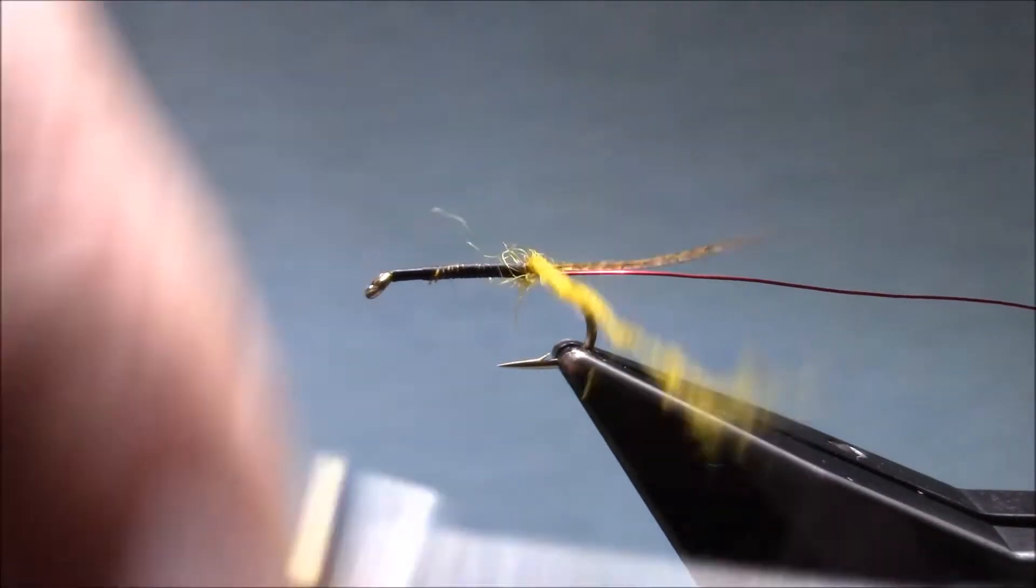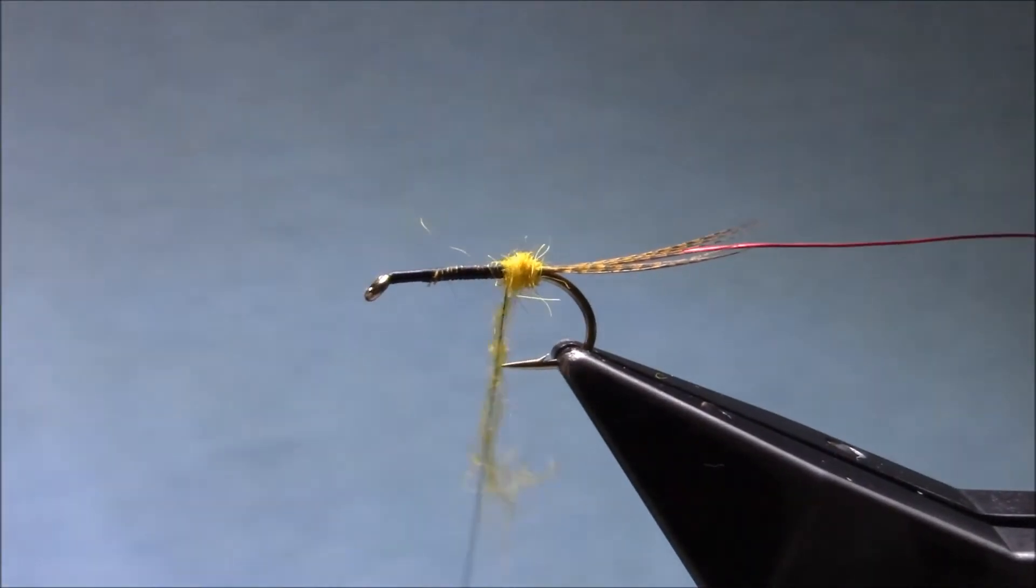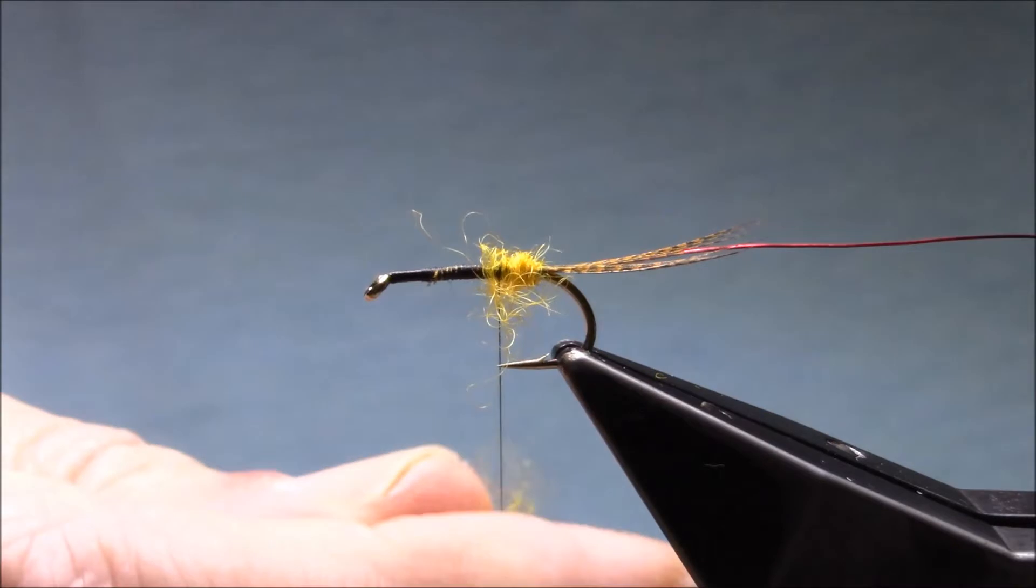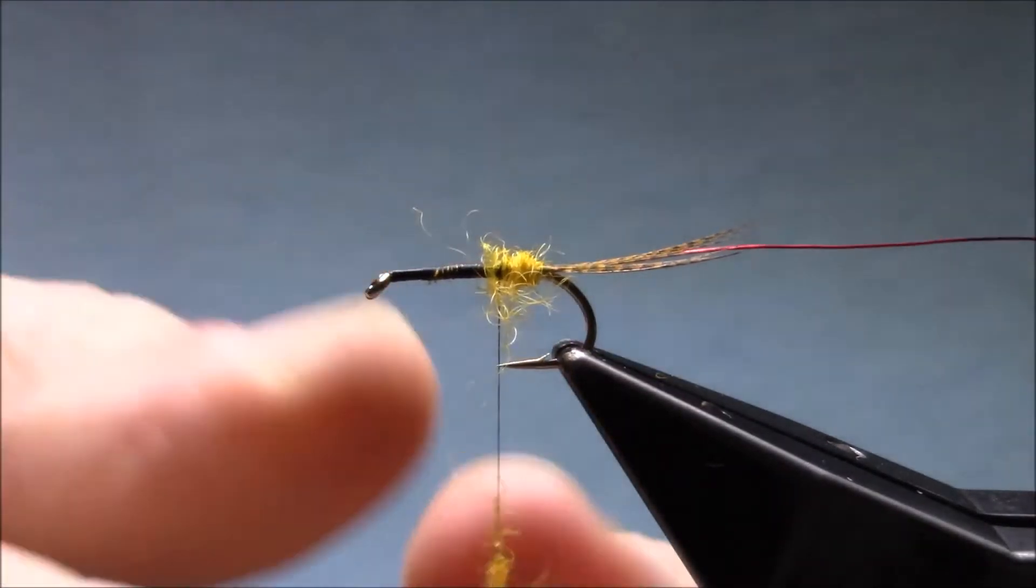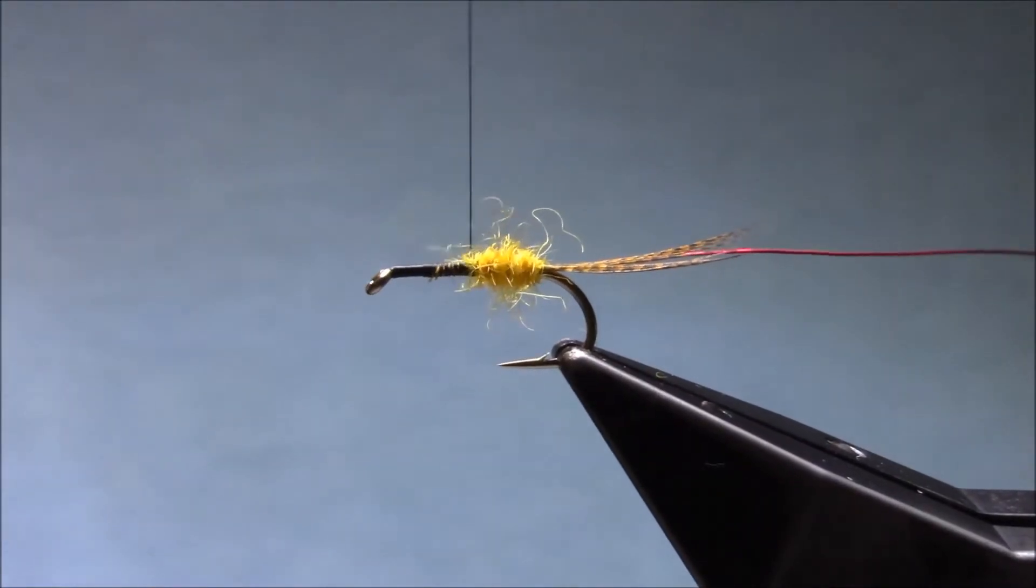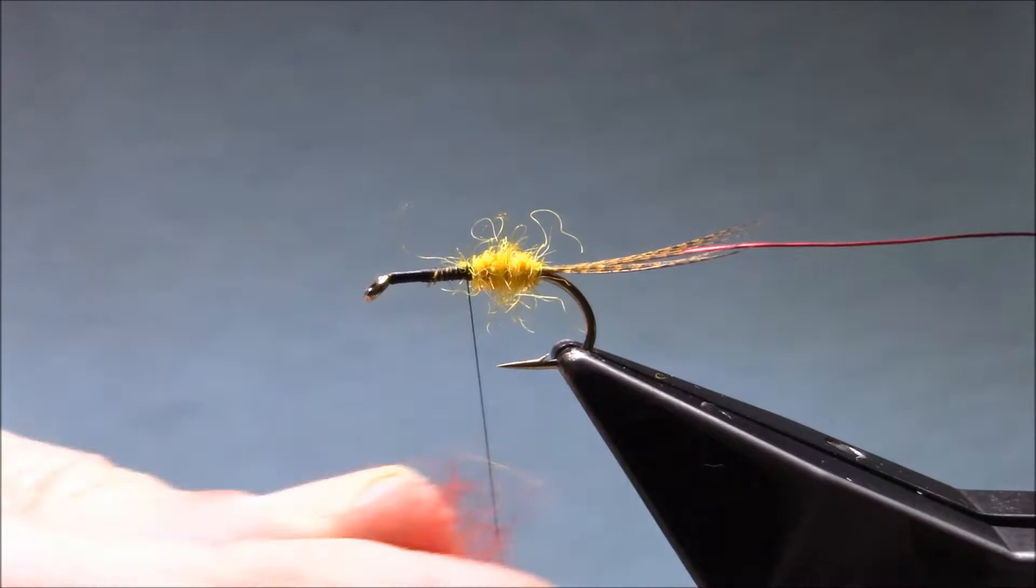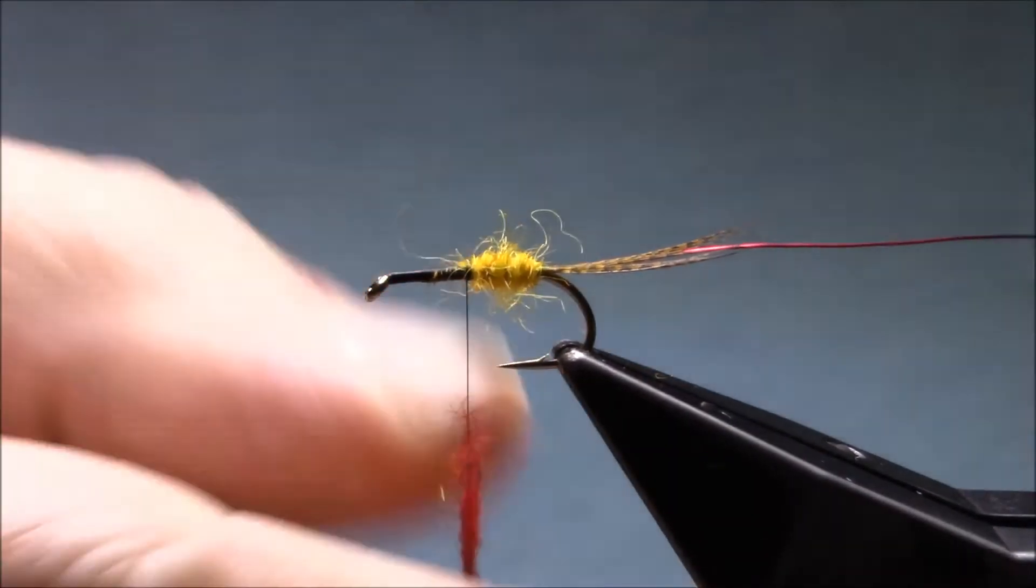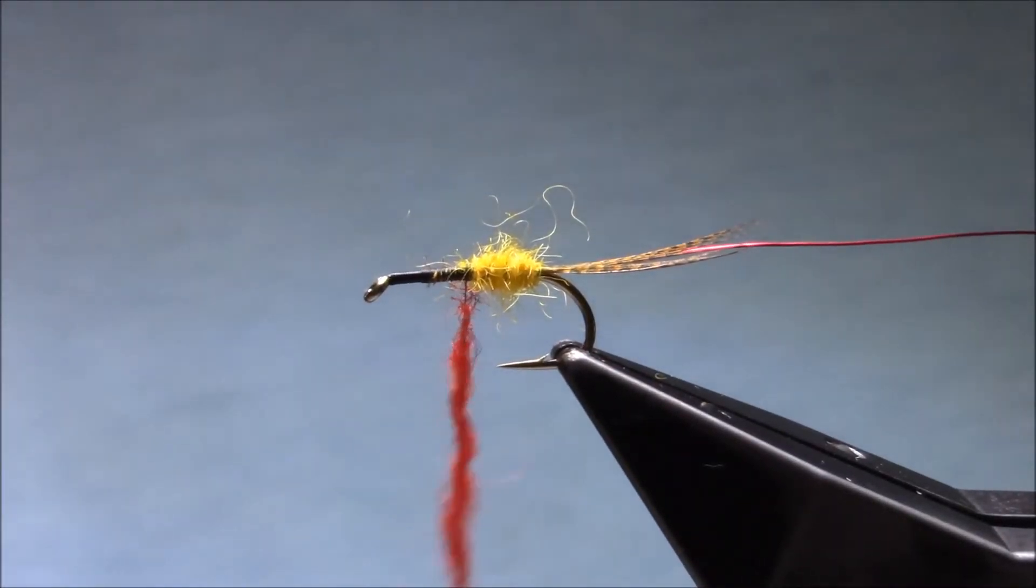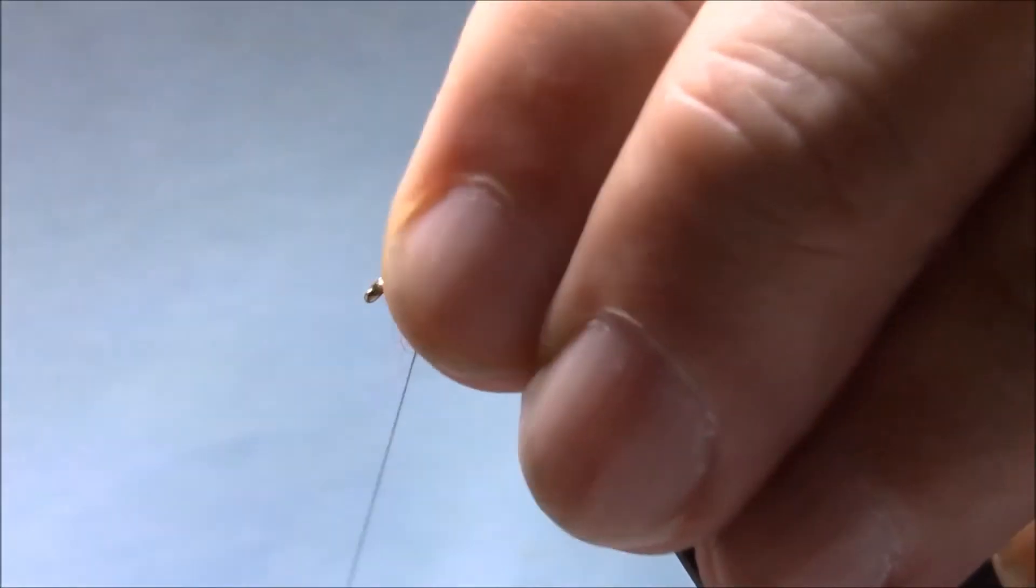Dub it on, turn to anchor it, and tighten it up. Add some more, same with the Blood Red. I'm going to palmer a hackle down the body, so don't get too worried.